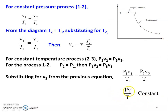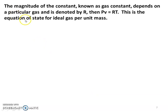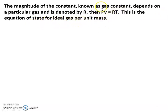P is the pressure, V is the specific volume, and T is the temperature, giving PV by T equal to constant. The magnitude of this constant is known as the gas constant, depending on the particular gas, and it is denoted by R. Then PV equal to RT. This is the equation of state for ideal gas per unit mass.